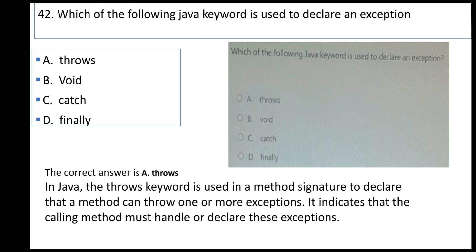In Java, the 'throws' keyword is used in method signatures to declare that the method can throw one or more exceptions. It indicates that the calling method must handle or declare these exceptions.